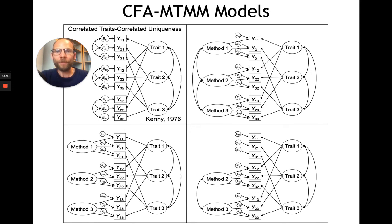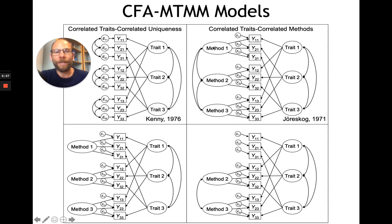Some of those limitations are addressed by the next model in the upper right-hand corner, called the correlated traits correlated methods model. In this model, first described by Carl Joris Cooke in 1971 — actually before the correlated uniqueness model — those correlated uniquenesses or correlated errors are replaced by method factors. We have a method factor for self-report, one for parent reports, and one for teacher reports. Method effects are now separated from measurement error and represented by latent method factors that can be correlated with one another and also with external variables.